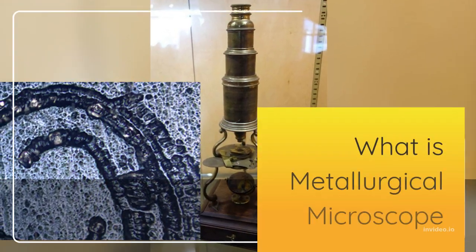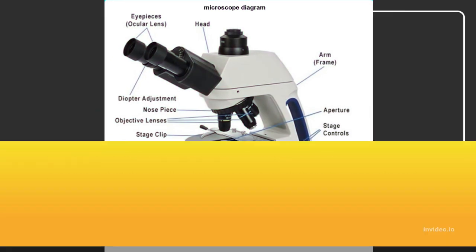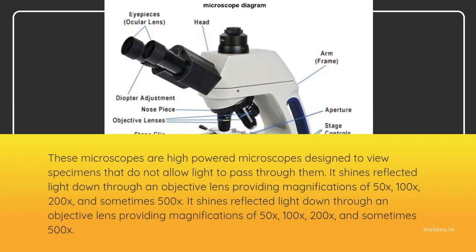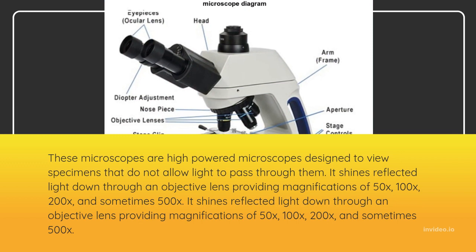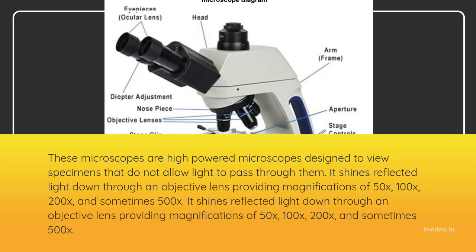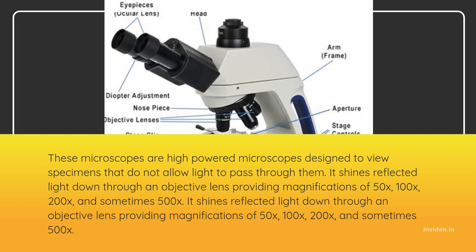What is Metallurgical Microscope? These microscopes are high-powered microscopes designed to view specimens that do not allow light to pass through them. It shines reflected light down through an objective lens providing magnifications of 50x, 100x, 200x and sometimes 500x.